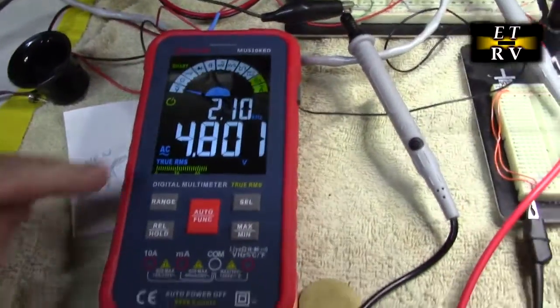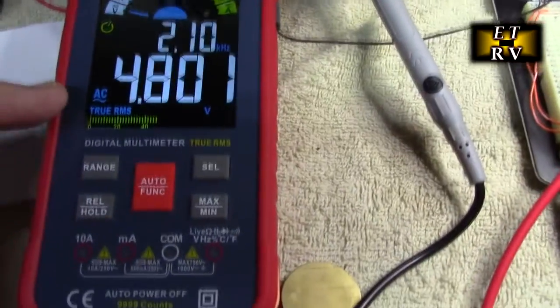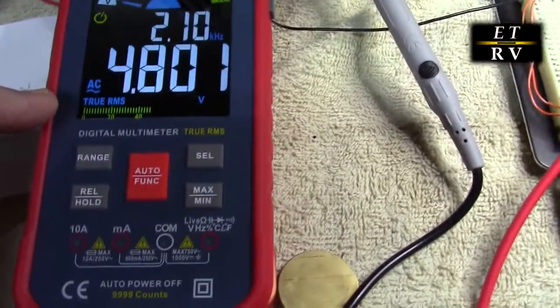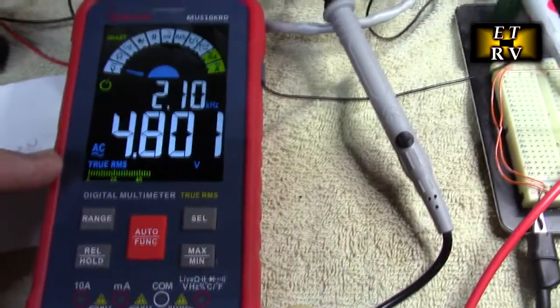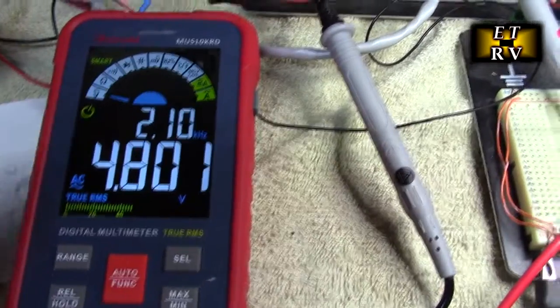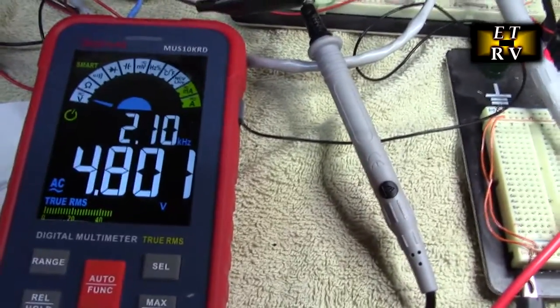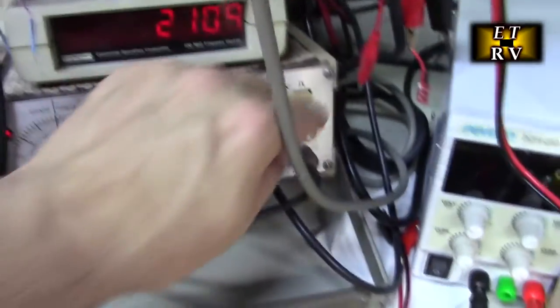And now I switched it in the auto mode, and I still have it connected to that generator. And look what it's showing me. It's showing me that it's 4.8 volts true RMS. And it's even telling me the frequency right there.